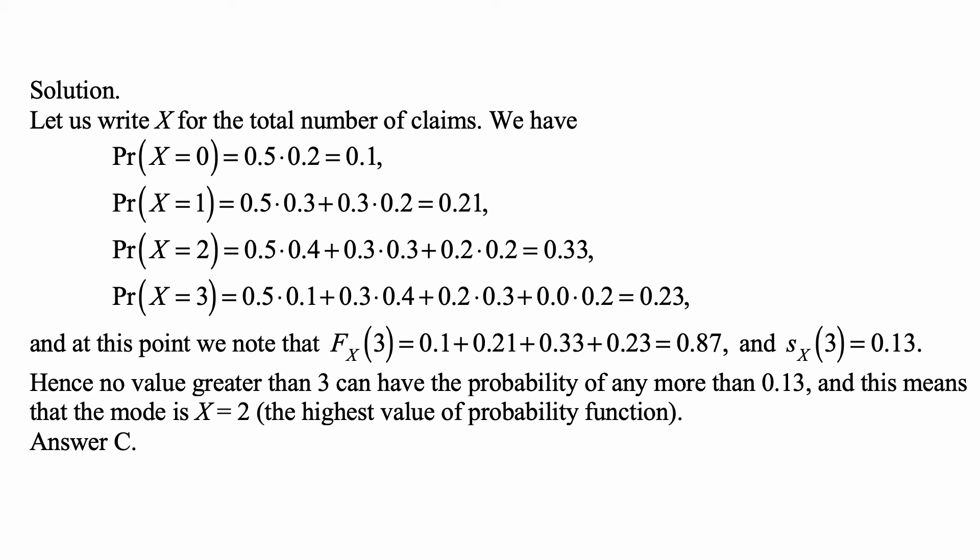Probability of X = 3 is 0 plus 3, 1 plus 2, 2 plus 1, and 3 plus 0. And again, we multiply out the probabilities, and we add them up for four mutually exclusive possibilities. And this is 0.23.